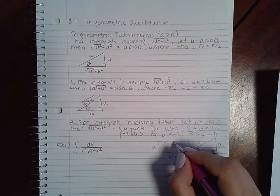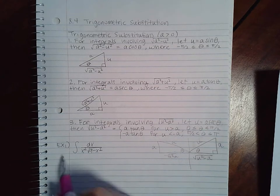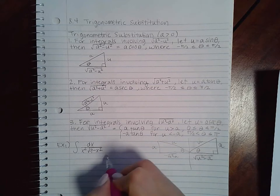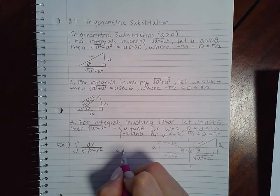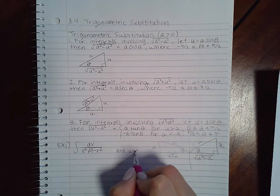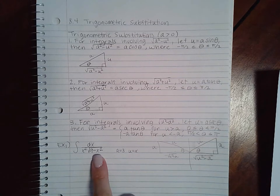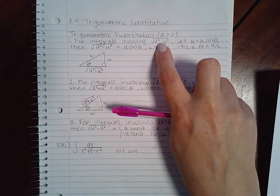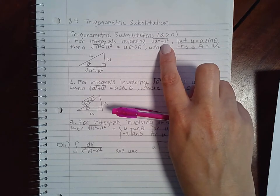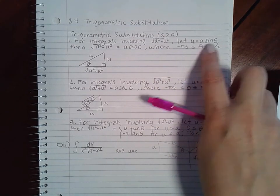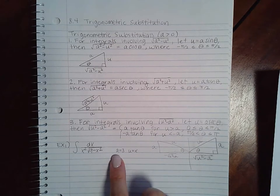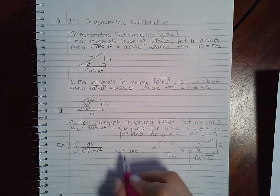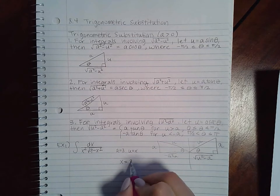For example one, let's go ahead and try this one out. I notice that this is the same as if a were 3 and u were x. What I'm going to use is the first one, since it has the constant minus the variable squared, which means my u is going to equal a sine theta.